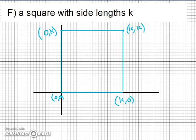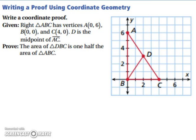You can use these ideas to write an actual proof here. Write a proof using coordinate geometry. You're given that you have a right triangle ABC, and it has the vertices A at 0, 6, B at 0, 0, and C at 4, 0. And D is the midpoint of AC.